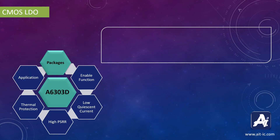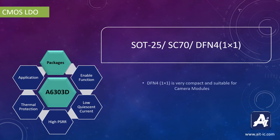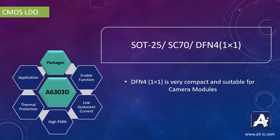A6303D is available in 3 different packages: SOT25, SC70, and DFN4. The DFN4 is a very compact package and is specially designed for use in camera modules.